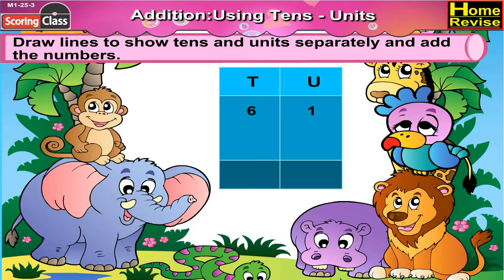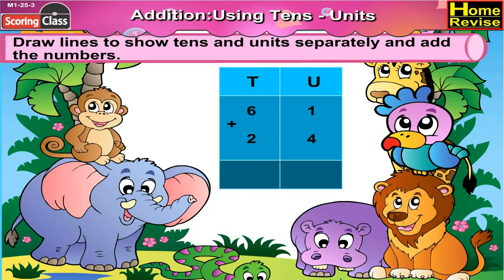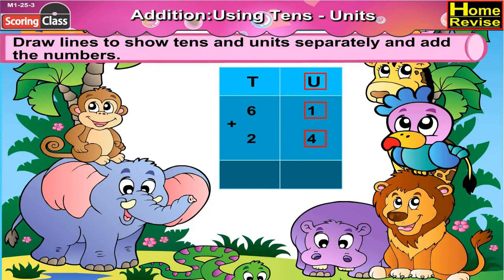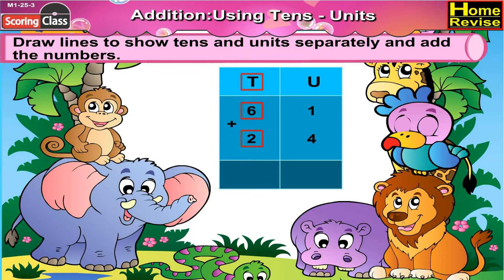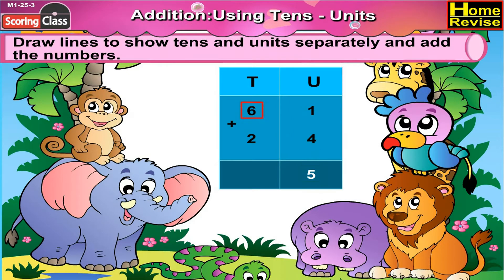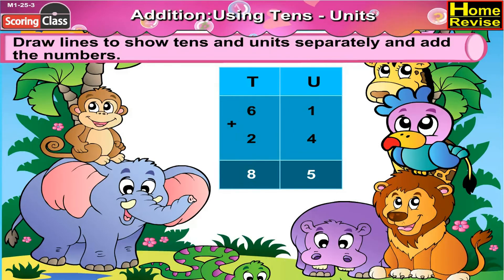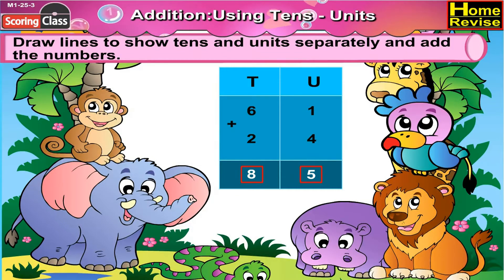Next is 61 plus 24. Let us draw a line between 61 and 24. Write units above 1 and 4 and tenths above 6 and 2. So 1 plus 4 is 5, 6 plus 2 is 8. So 61 plus 24 is 85.